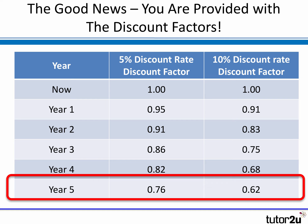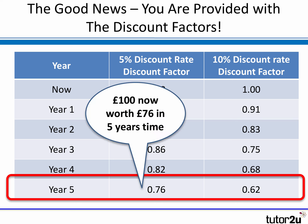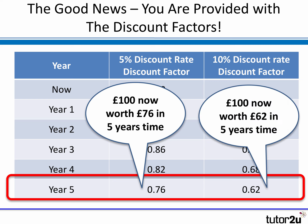To understand how discount factors change depending on the discount rate used, look at year five. Using a 5% discount rate, the discount factor in year five is 0.76, whereas with a 10% discount rate it is 0.62. This means that using 5%, £100 now would be worth £76 if received in five years' time. However, a higher discount rate has a bigger effect — it reduces further the value of future cash flows — just £62 in five years' time compared with £100 now.